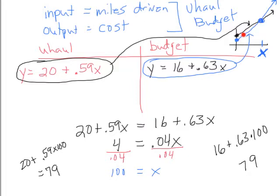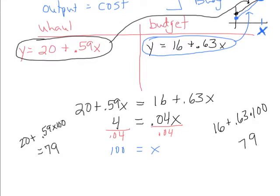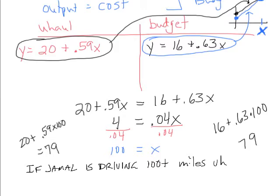But if he's going to be driving more than 100 miles he should choose U-Haul because it's cheaper overall for him to use U-Haul. So we look back at what the question was asking, it says when will U-Haul be the better choice for Jamal and we discovered if he's driving more than 100 miles. So if Jamal is covering more than 100 miles or driving 100 plus miles, U-Haul is a better deal.